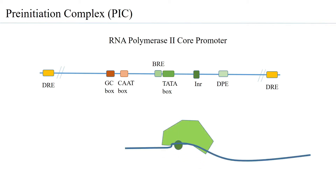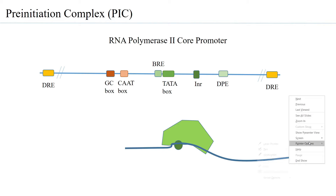The first complex that actually comes and binds to the promoter region is the transcription factor 2D (TF2D) complex. This TF2D complex contains what is called the TATA binding protein (TBP), and the TATA box binding protein is able to interact with the TATA box directly.